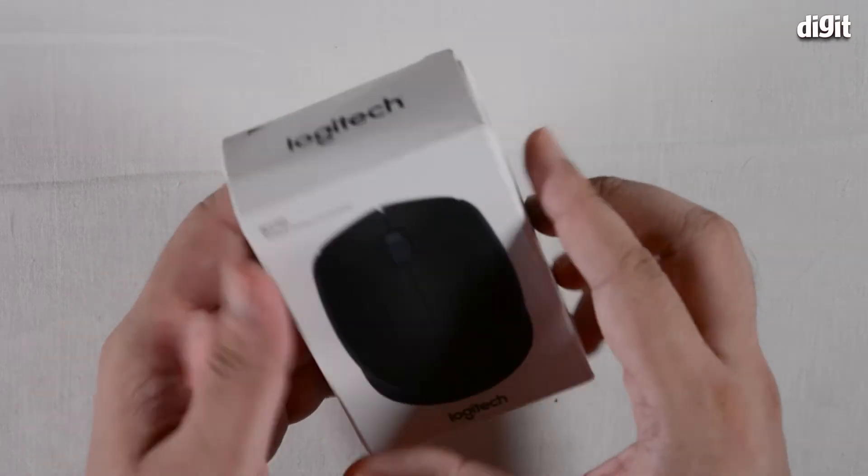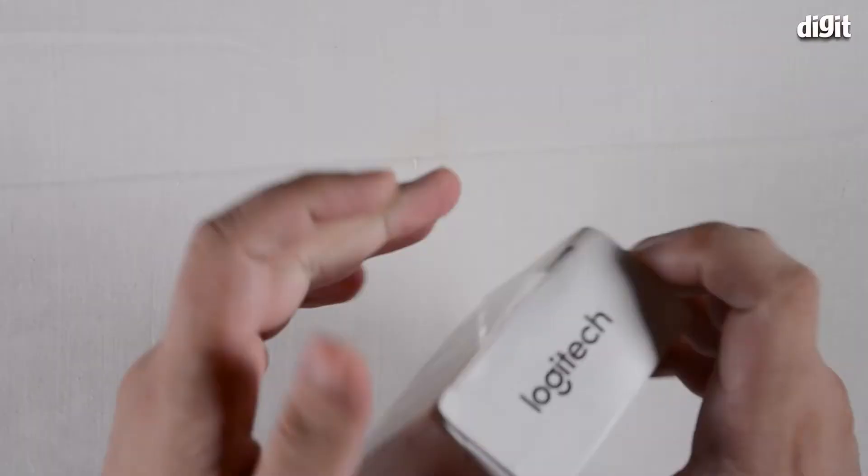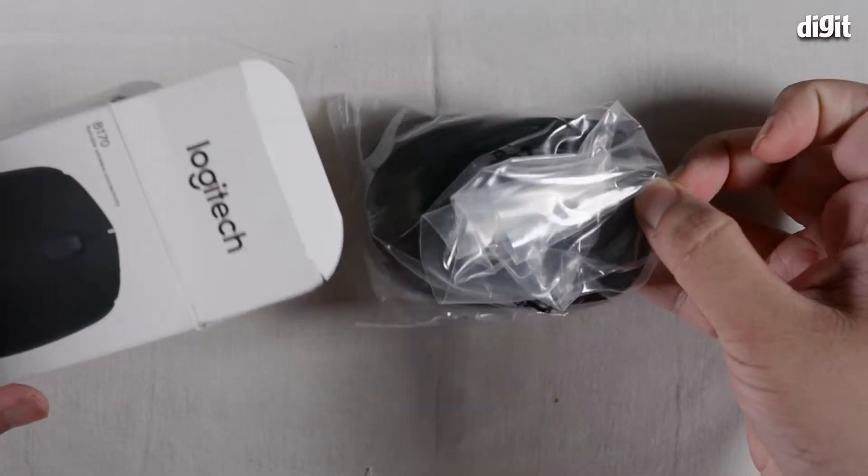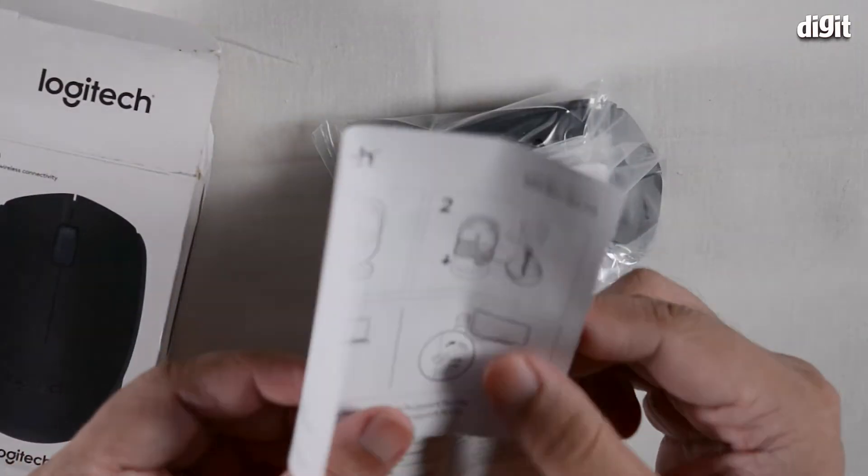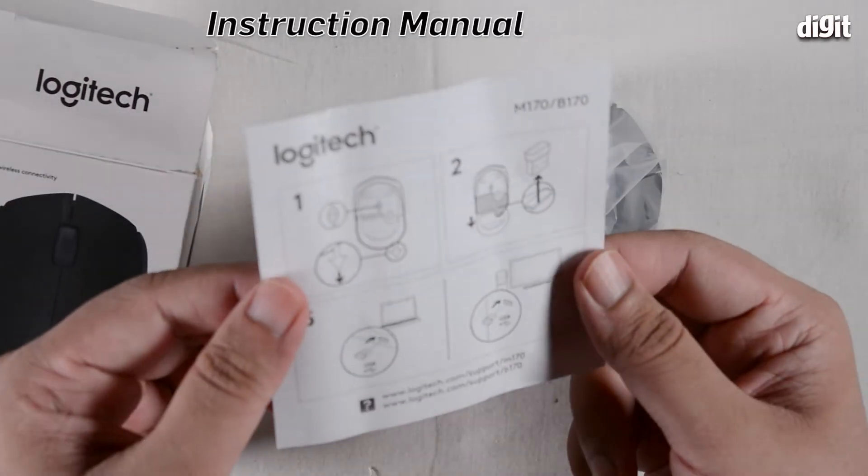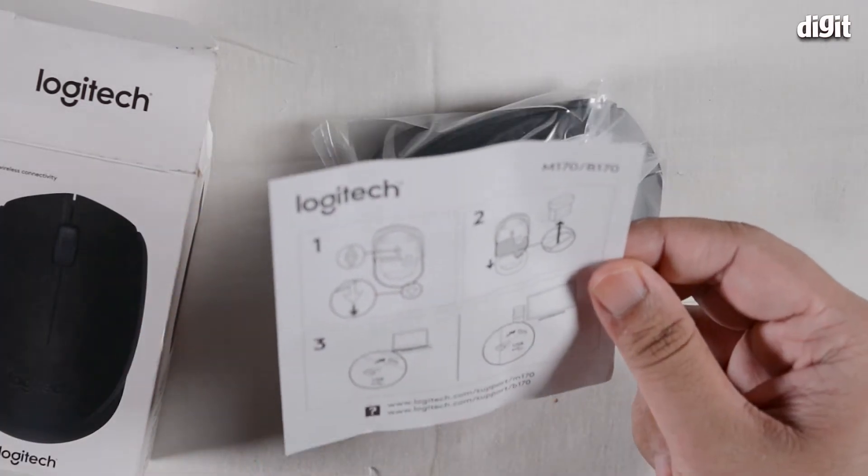And we can proceed with the unboxing. There it is, the mouse itself inside little packaging, and then there is a little instruction manual that tells you how to set it up, how to switch it on, where to find the little dongle that allows you to plug it into the PC.